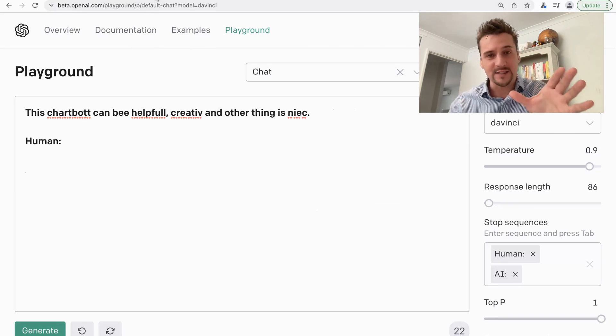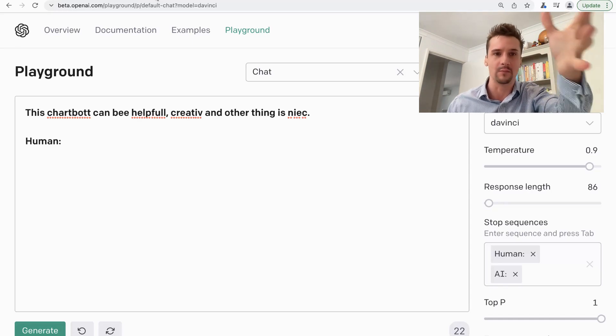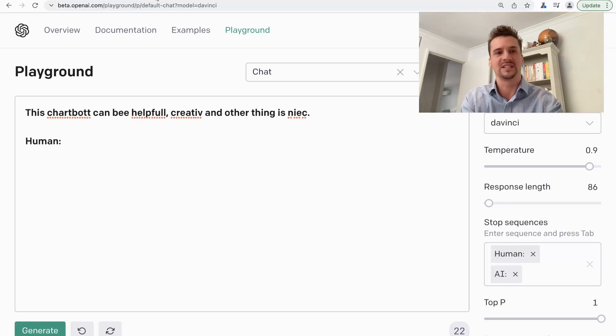Here's the first learning from this video: you need to get your spelling and grammar perfect. By way of example, I've put a really bad example of a prompt here with spelling errors through it, even grammar errors. It says something like 'This chatbot can be helpful, creative, and other thing is nice.' That makes no sense, and I've made sure there's spelling errors here.